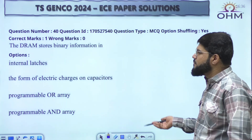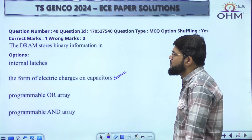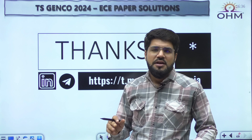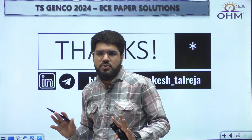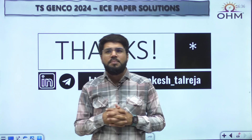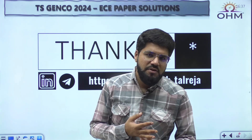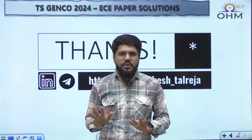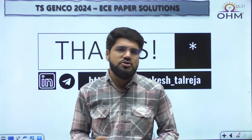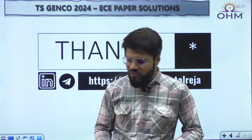For DRAM: if you have studied it, you know DRAM stores information in the form of charges on a capacitor — option number B. That's it for the 10 questions from digital electronics. Around four to five were statement-based or direct tick-mark questions; only two or three involved calculations, and those were formula-based. Overall, a simple level — questions solvable within one minute, some in just 20–30 seconds if you've studied. This is Akash signing off from Ohm Institute — stay subscribed for more such videos.